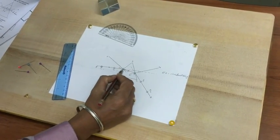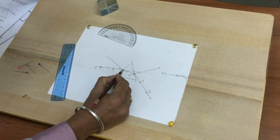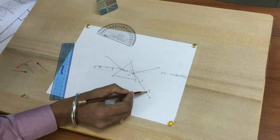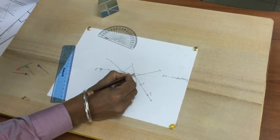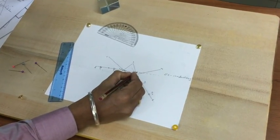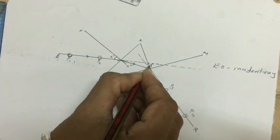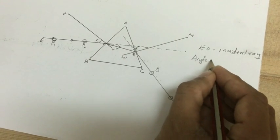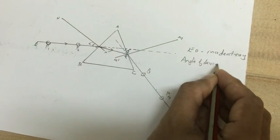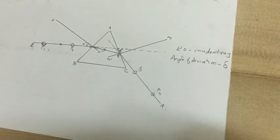Now you can see that the angle formed between the produced incident ray and the emergent ray is called the angle of deviation. The angle of deviation is given by a Greek letter delta.